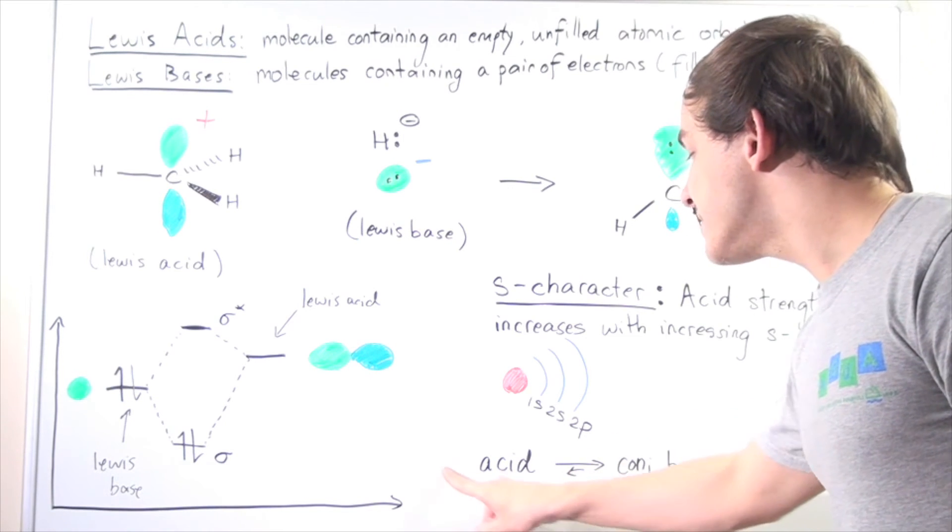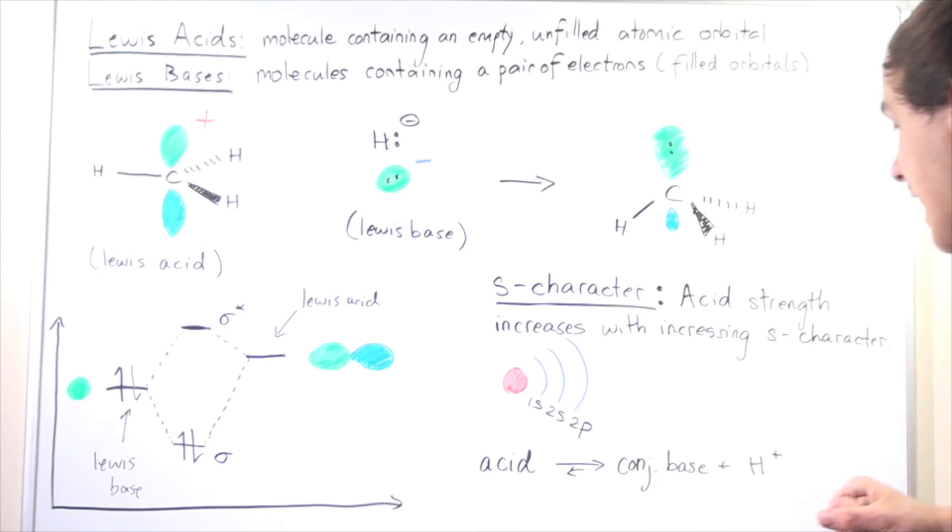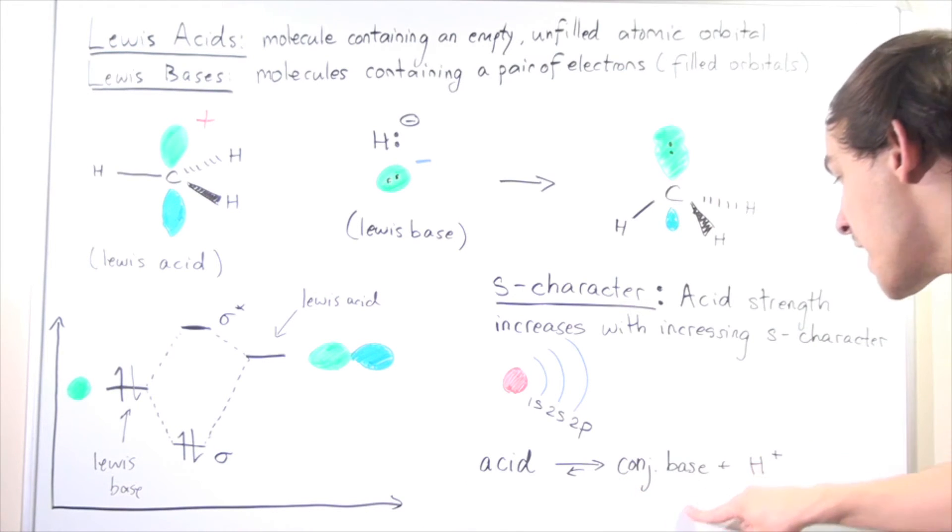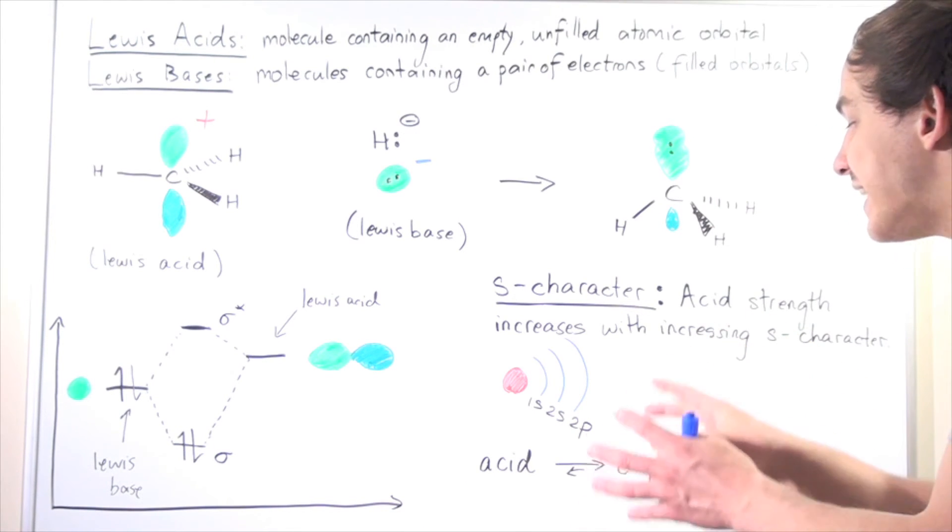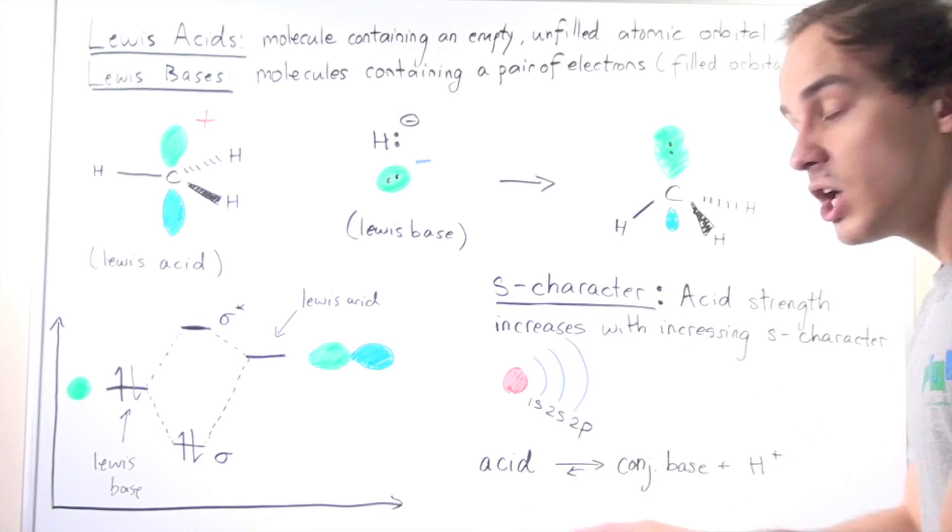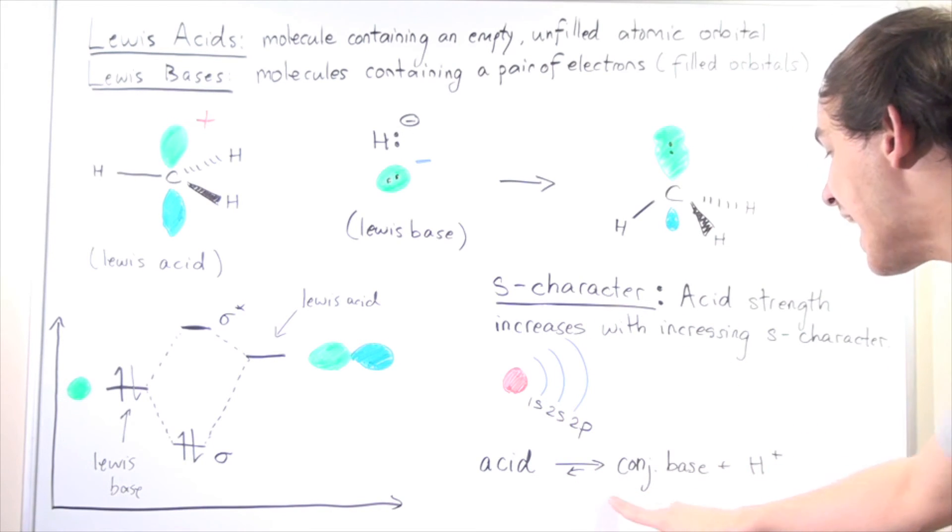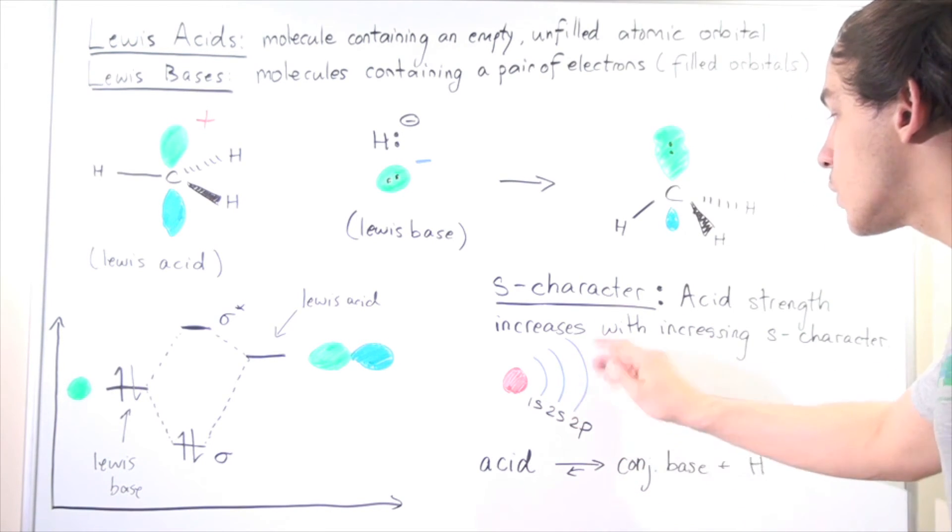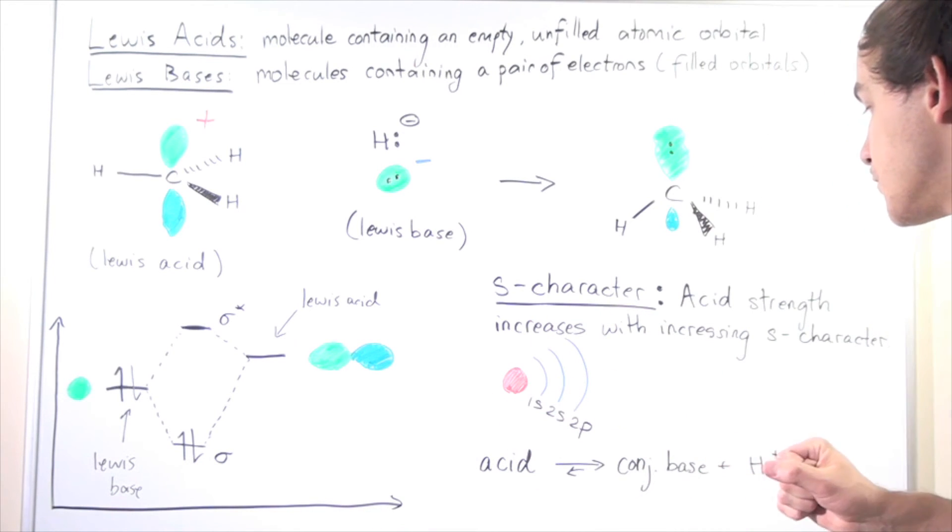If this has a lot of S character, that means the electron pair here will be found in that S character. So the more S character we have, the closer our electrons are to our nucleus, and the more stable our conjugate base is.